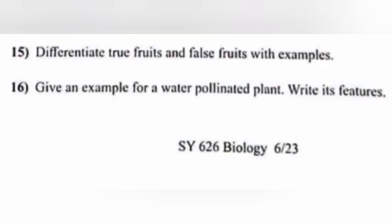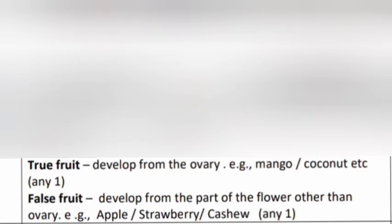Question 15: Differentiate true fruits and false fruits with examples. True fruit is developed from the ovary — example: mango or coconut. False fruit is developed from parts of the flower other than the ovary — example: apple, strawberry, cashew.